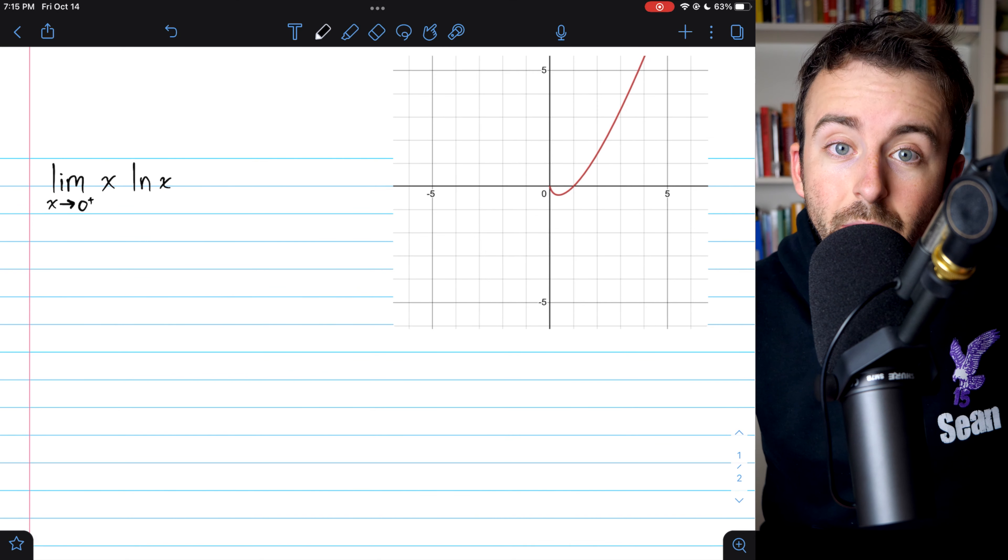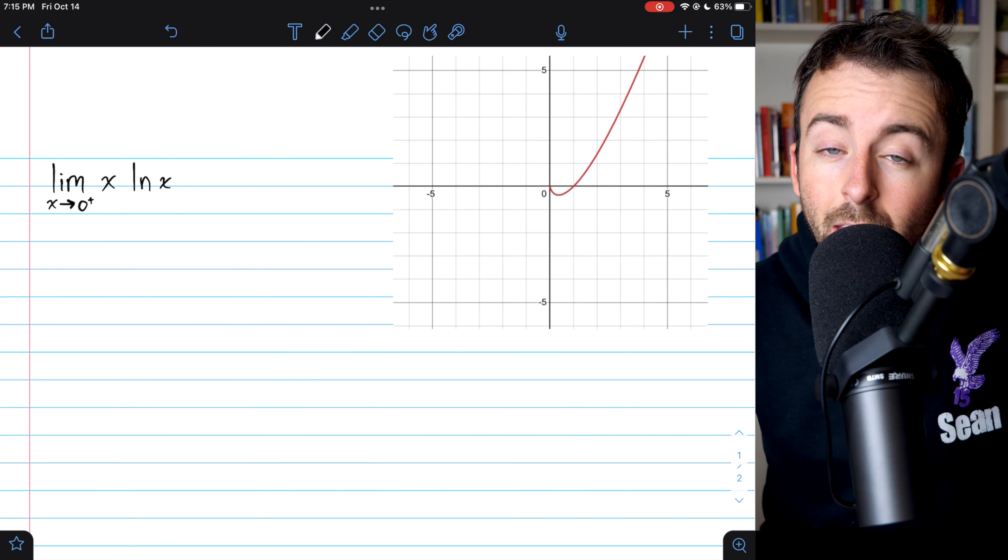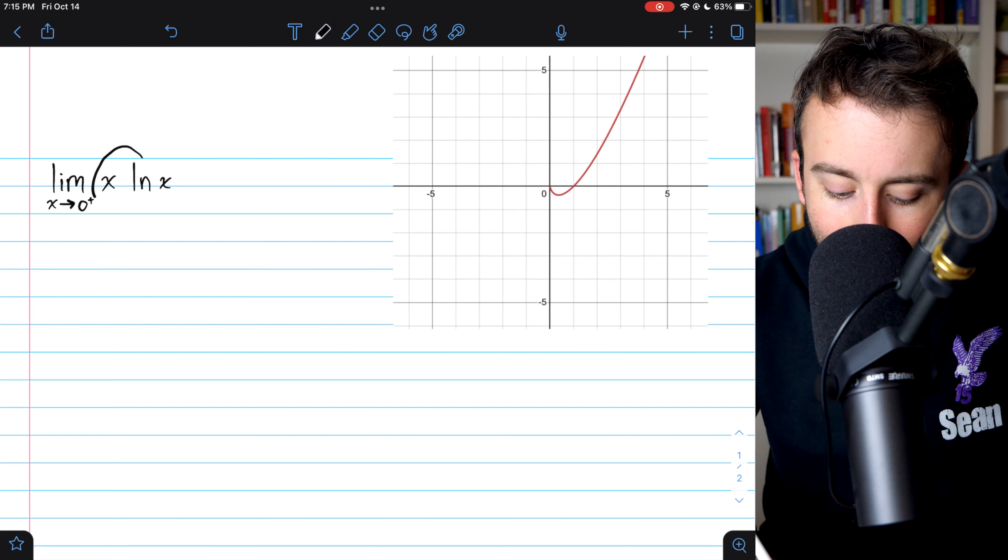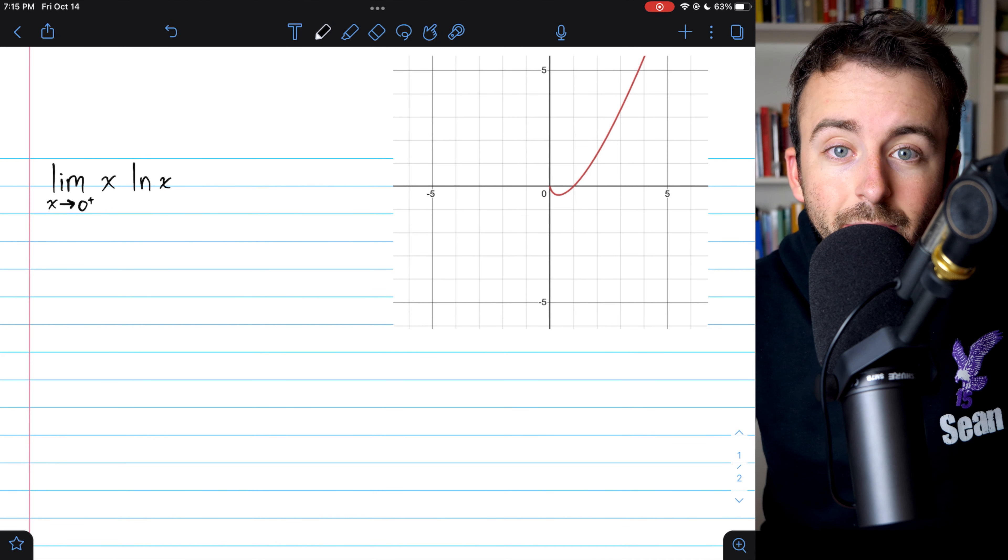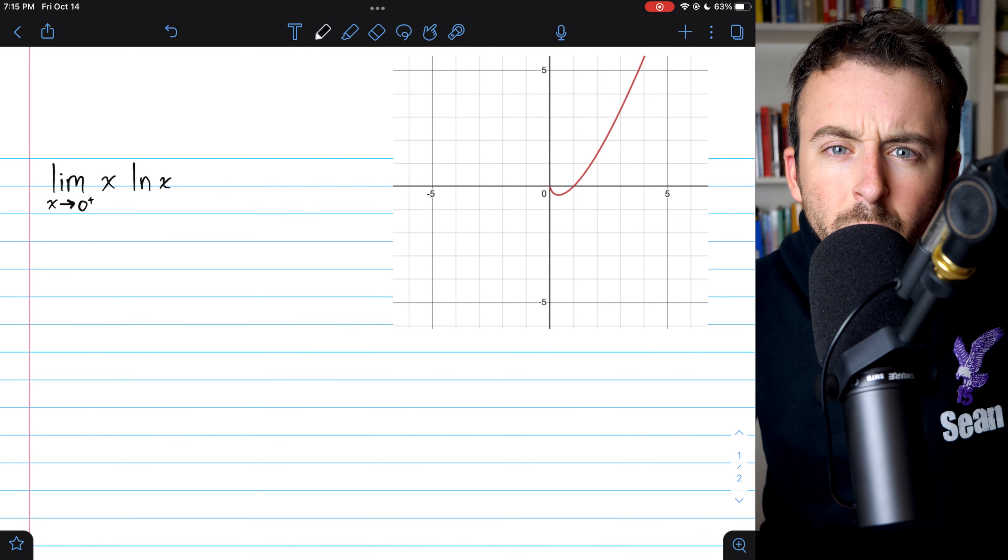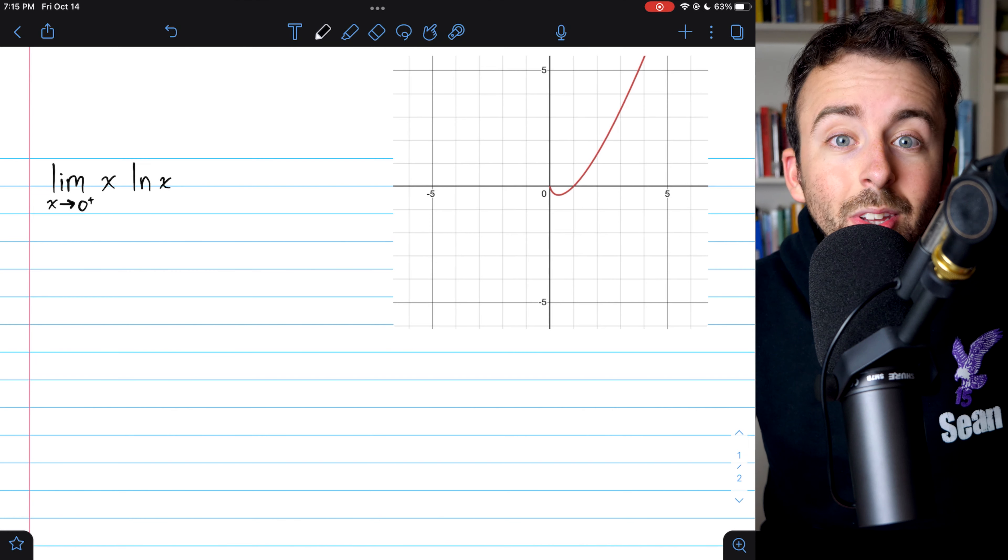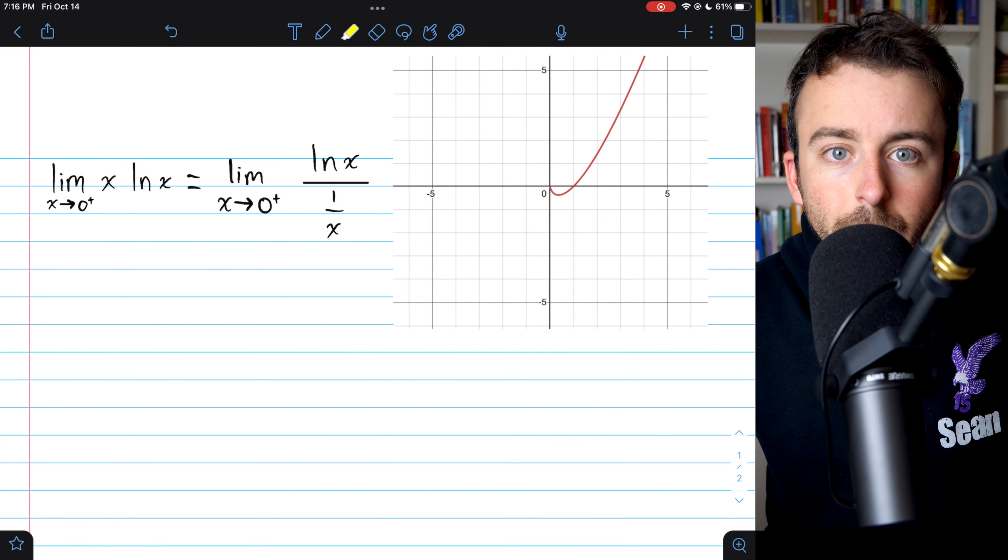This function is approaching a value of zero from the right, but we can't just plug zero in since natural log of zero is undefined. So how do we evaluate this limit? We're going to have to use L'Hopital's rule. To use L'Hopital's rule,